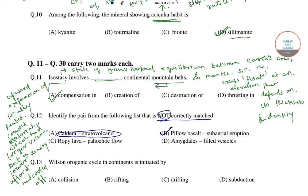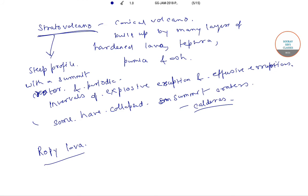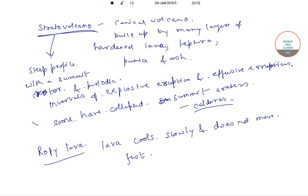The other two matches are also correct. Ropey lava is formed when the lava cools slowly and does not move fast, and it is associated with pahoehoe flow.